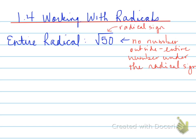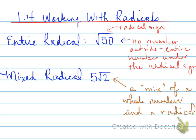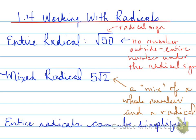An entire radical can be reduced to something called a mixed radical. For example, root 50 can be reduced to 5 root 2. A mixed radical contains a mix of a whole number and a radical. The question is: how does root 50 become 5 root 2? Entire radicals can be simplified to a mixed radical.